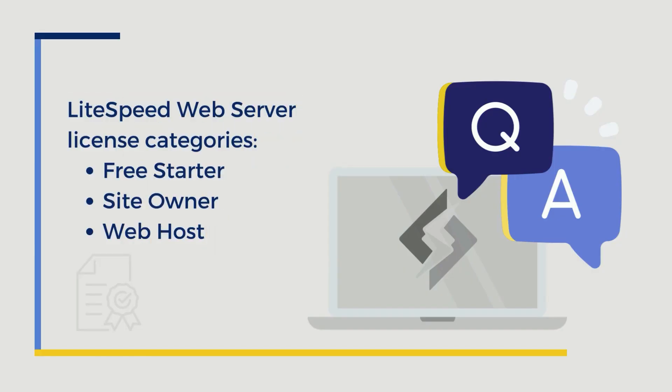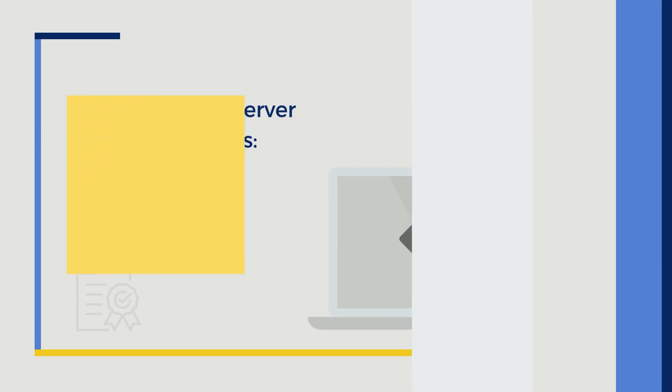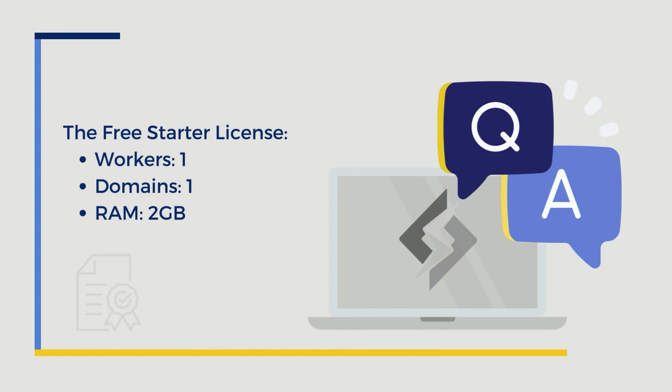What are the different types of Lightspeed Web Server licenses? There are three categories of licenses for the enterprise version of Lightspeed Web Server: free starter, site owner, and web host. Each type of license has its own particular set of limits, and that's how you choose which license is right for your application. As the name implies, the free starter license is free. It includes one worker and has a one domain limit and a two gigabytes of RAM limit. These limits are strictly enforced, so if you want to host more than a single domain or your server has more than two gigabytes of RAM, you'll need to choose a more robust license.